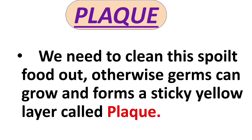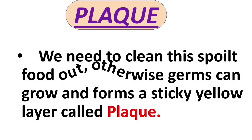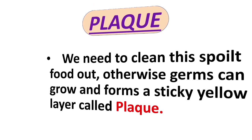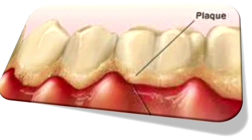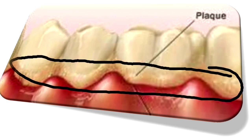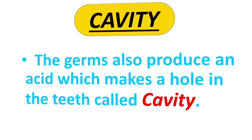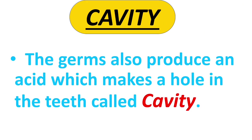We need to clean the spoiled food out, otherwise germs can grow more and form a sticky yellow layer called plaque. Look at the picture — can you see this yellow layer? This is known as plaque, and plaque is the first sign that the teeth is starting to decay.